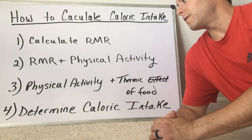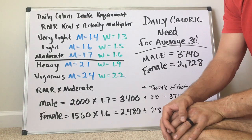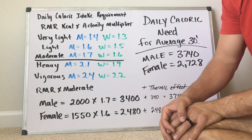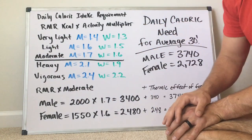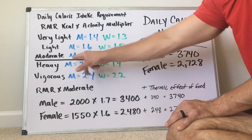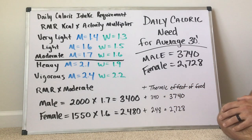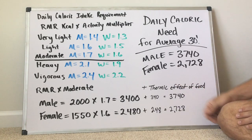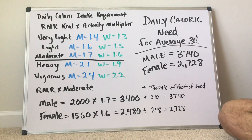Next, you're going to add that to your physical activity level. We take the resting metabolic rate in kilocalories times your activity multiplier. We're taking the average male and female and multiplying that by very light, light, moderate, heavy, or vigorous activity. For example, if you're a male and your resting metabolic rate is an average of 2,000, times 1.7 at a moderate intensity every day, you're burning about 3,400 calories, plus about 340, or 10%, which is your thermic effect of food.